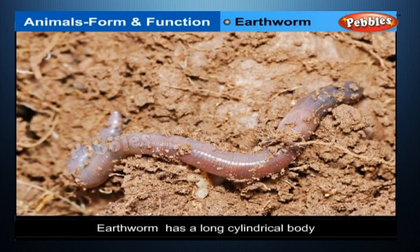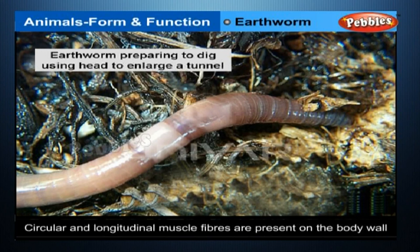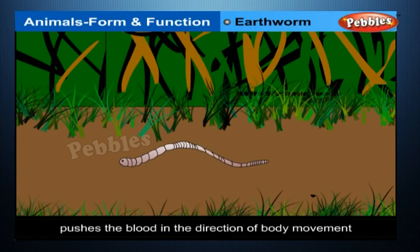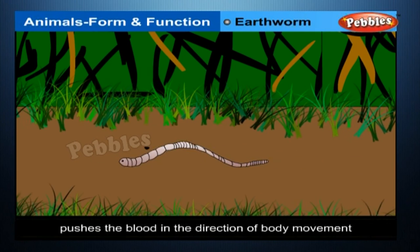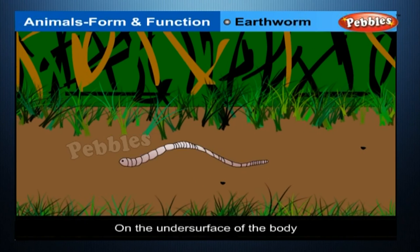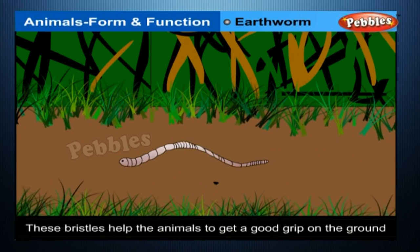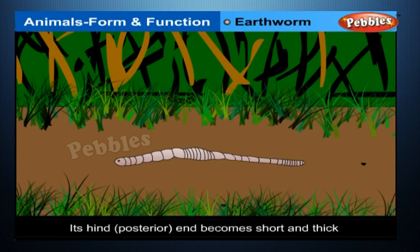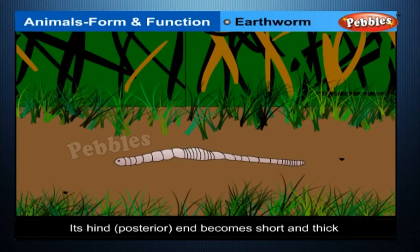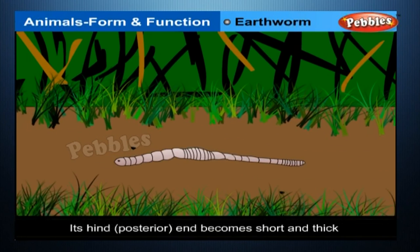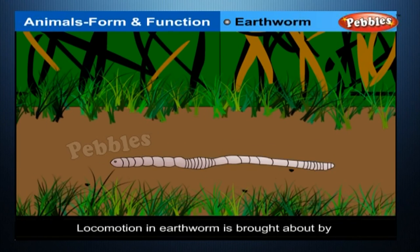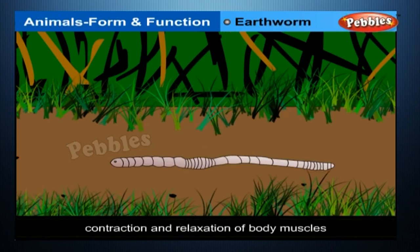Earthworm. The earthworm has a long cylindrical body without sense organs. Circular and longitudinal muscle fibres are present on the body wall. The movement of these muscles pushes fluid in the direction of body movement, helping the animal move forward. On the undersurface of the body, minute bristles are present that help the animal grip the ground. When it moves, the front (anterior) end becomes long and thin while the hind (posterior) end becomes short and thick. This is due to contraction and relaxation of body muscles. Thus, locomotion in the earthworm is brought about by contraction and relaxation of body muscles.